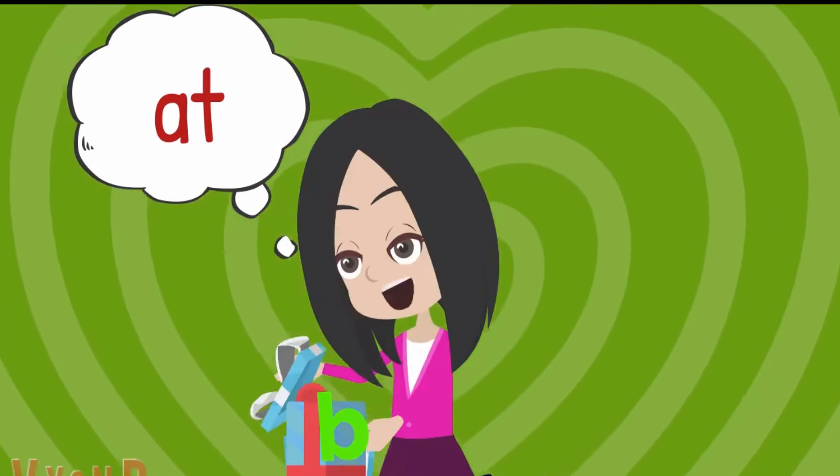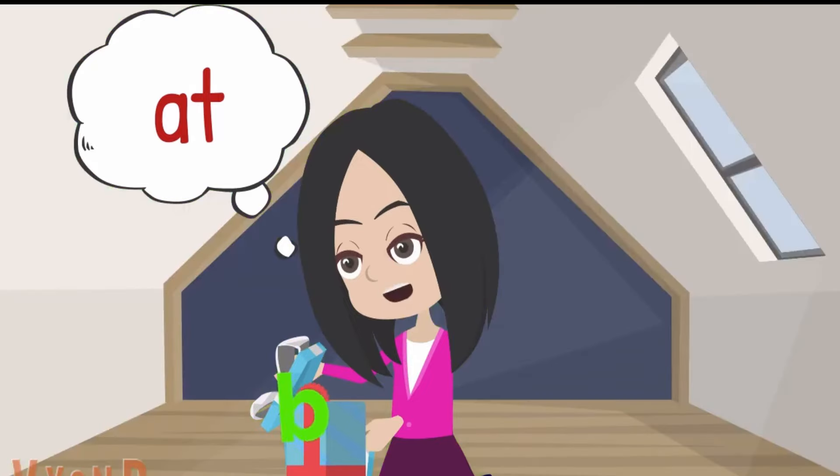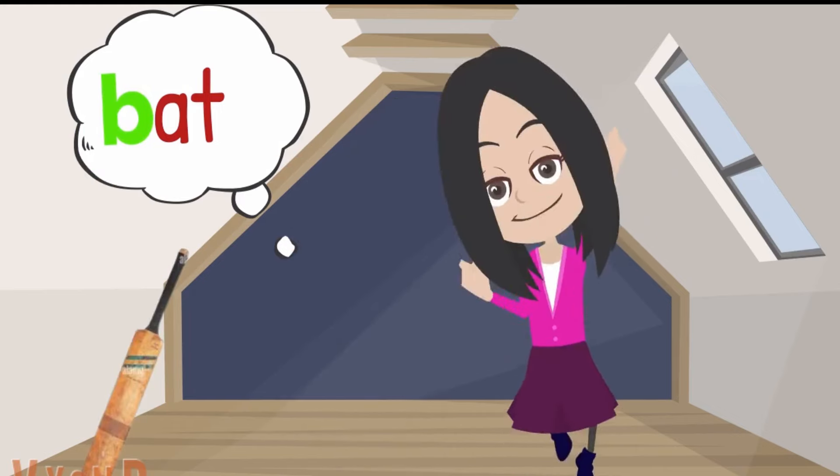Now guess what is in the third box. With letter B. B-at. B, B-bat. Yes, it's a bat. I can read the word bat.